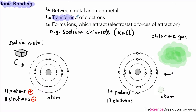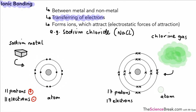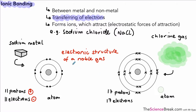So how does ionic bonding work? It involves the transferring of electrons. The outermost electron from the sodium atom can be transferred to the outer shell of chlorine. That means we now have a full outer shell on the sodium. We say it has achieved the electronic structure — in other words the arrangement of electrons — of a noble gas, meaning it has a full outermost shell.